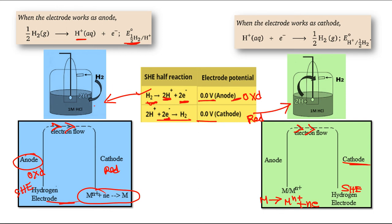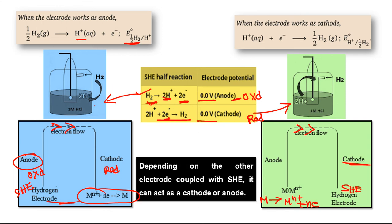Both processes are possible. The answer to our question is: depending on the other electrode coupled with SHE, it may behave as cathode or as anode. If the other system is electron-rich, it will give electrons to SHE, so SHE is reduced and acts as cathode, while the other system is oxidized. If SHE is electron-rich, it gives electrons and acts as anode. It depends on the reducing tendencies of the other system compared to SHE.